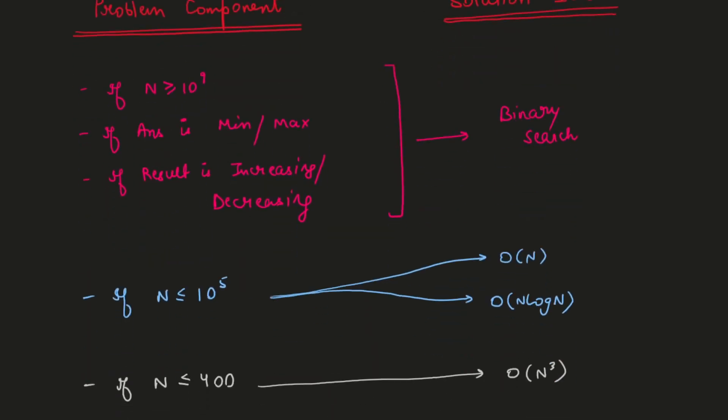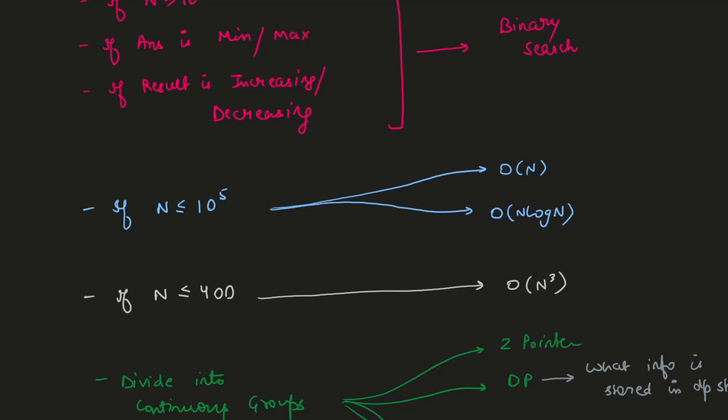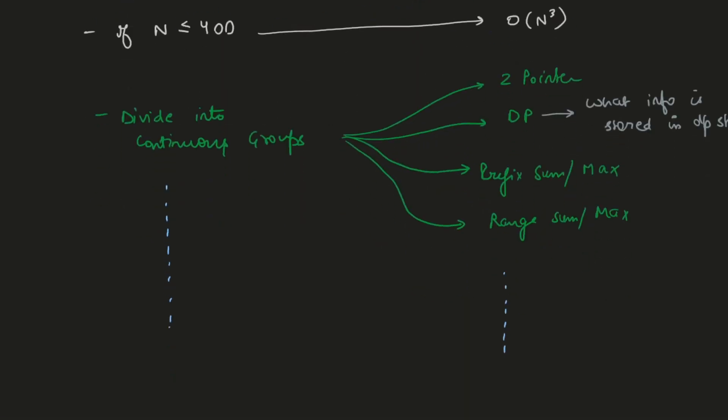If n is less than 1e5, you can say it's an O(n) or O(n log n) solution — maybe sorting will work. If n is less than 300 or 400, then maybe an O(n²) or O(n log n) solution works. If you need to bifurcate the array into multiple continuous components, you can think of a two-pointer approach, a DP approach, or a prefix sum or prefix max approach.